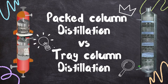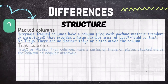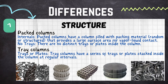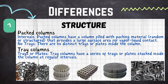The first key difference is about structure. In the case of packed column distillation, the column is filled with packing materials. Packing materials are of two types — random packing and structured packing. This packing material provides a very large surface area for vapor-liquid contact, which increases the efficiency of separation. The higher the vapor-liquid contact, the better the separation.